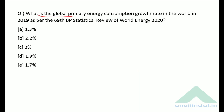What is the global primary energy consumption growth rate in 2019 as per the 69th BP Statistical Review of World Energy 2020? According to this review, the energy consumption growth rate in the world in 2019 is 1.3%.